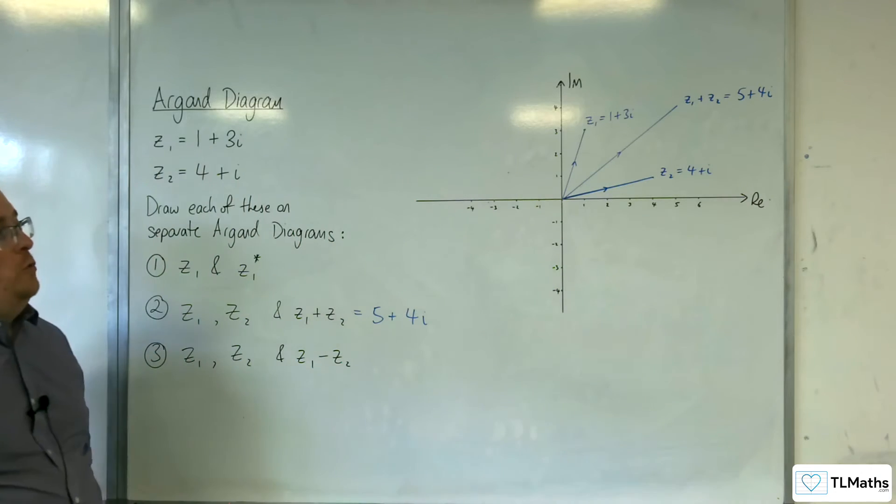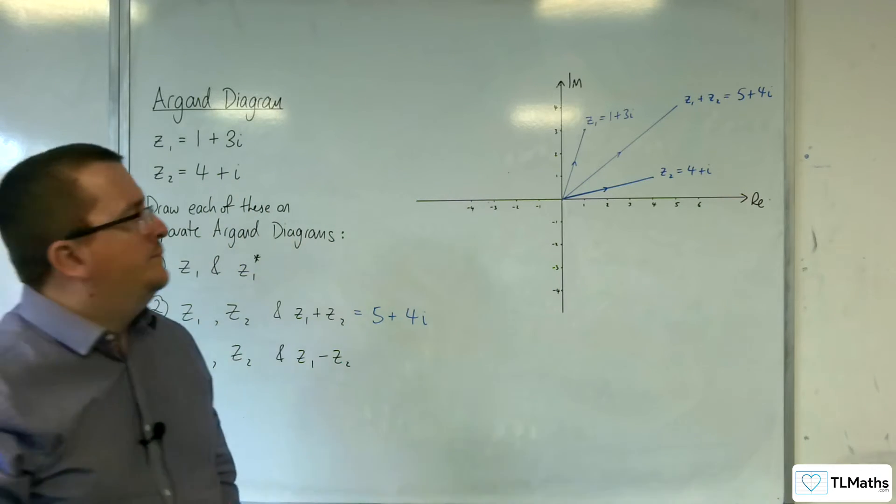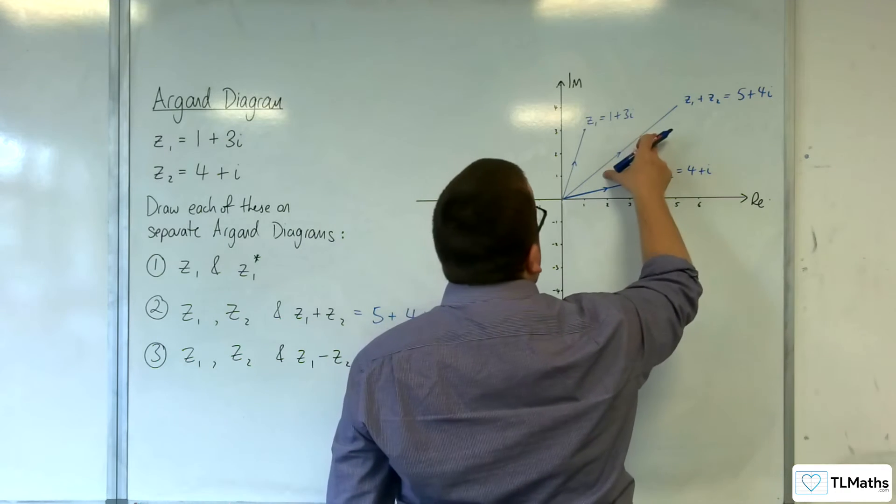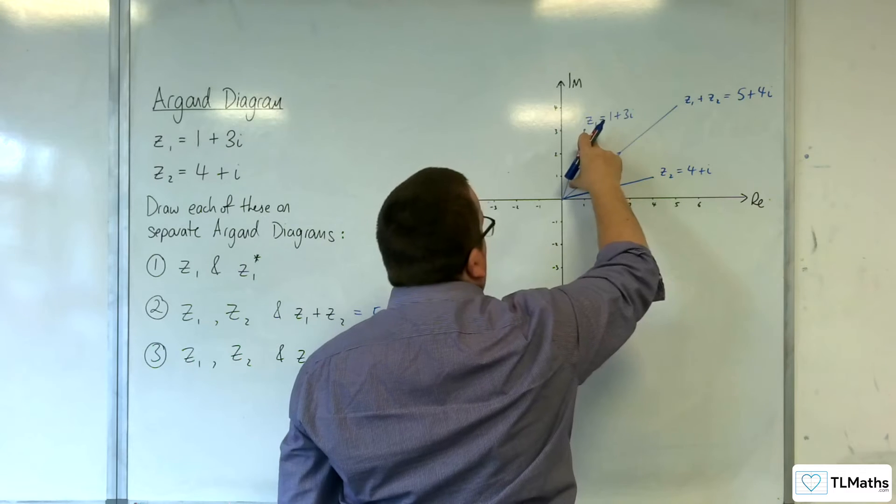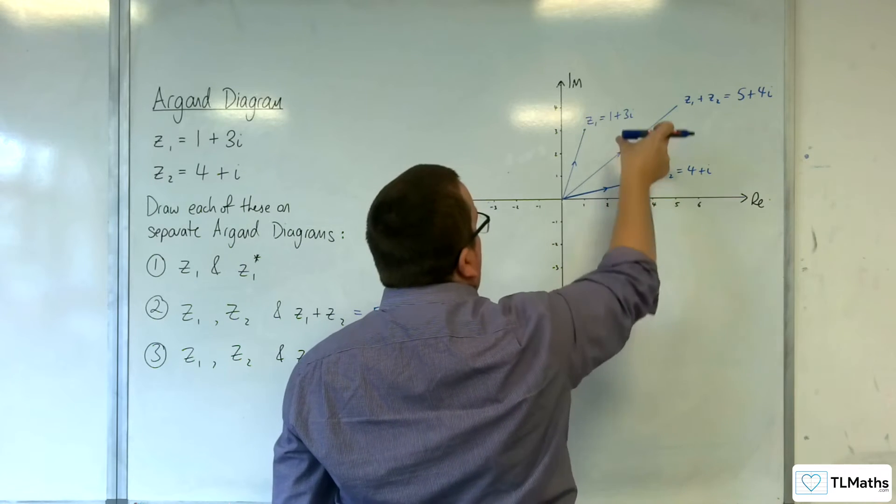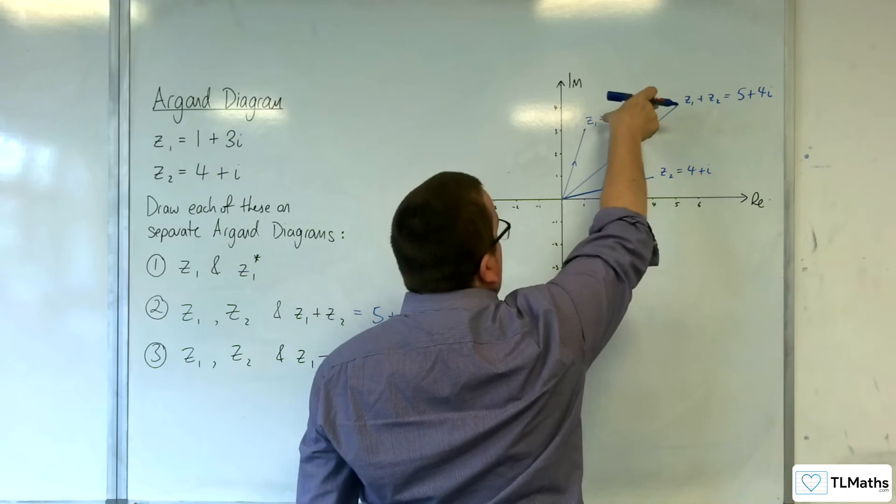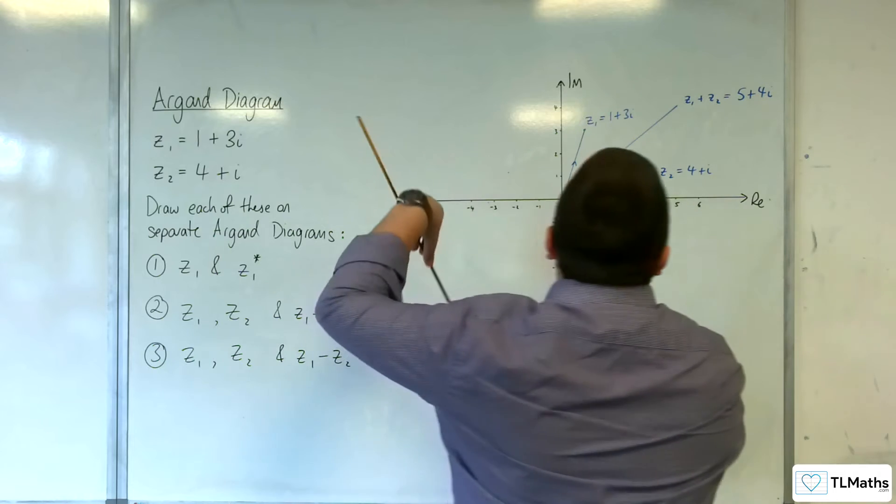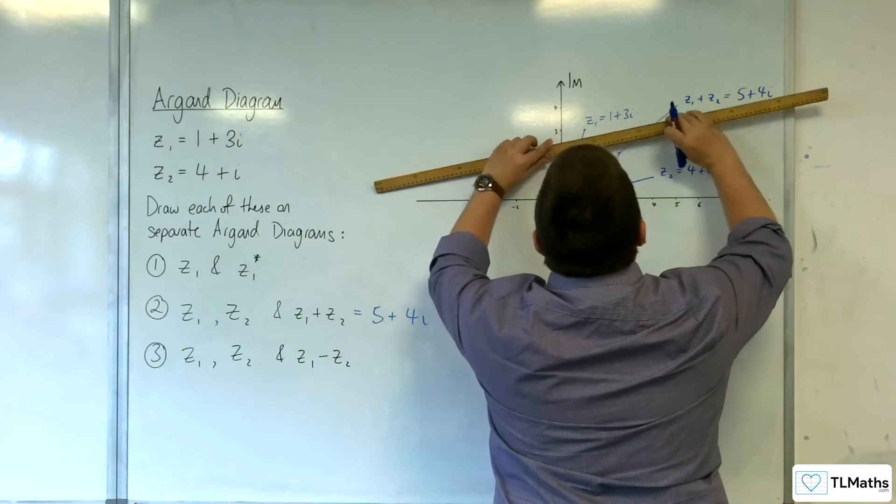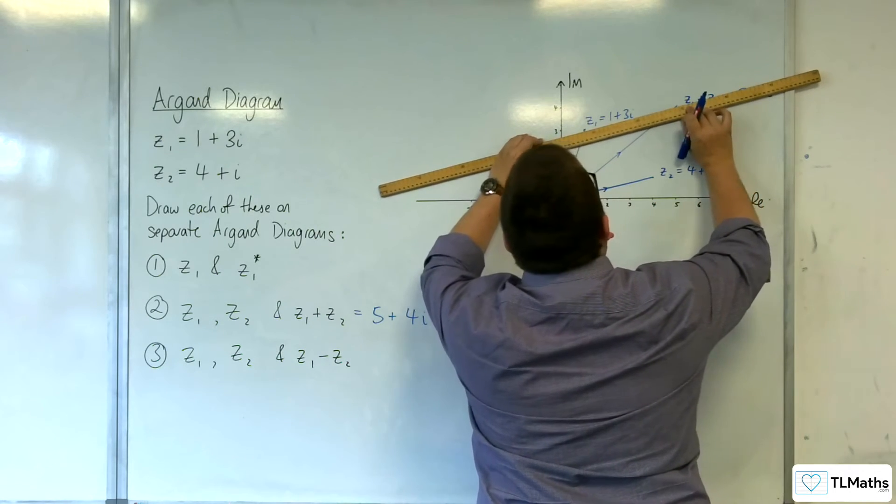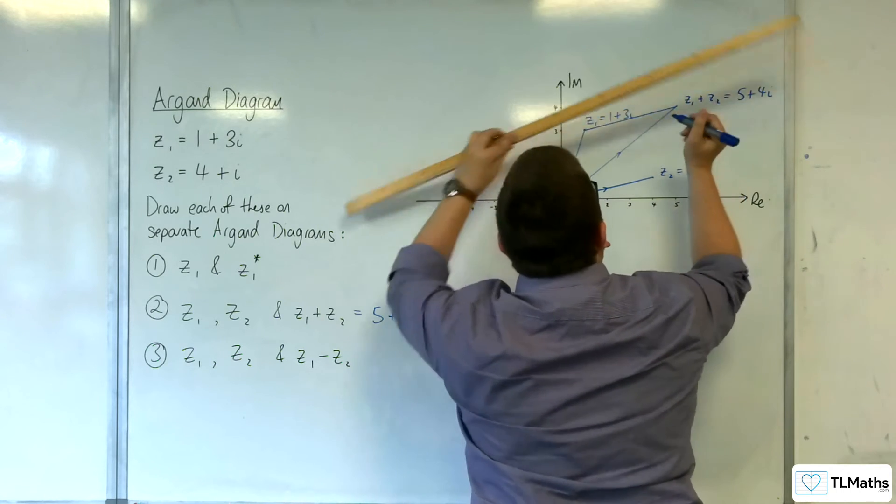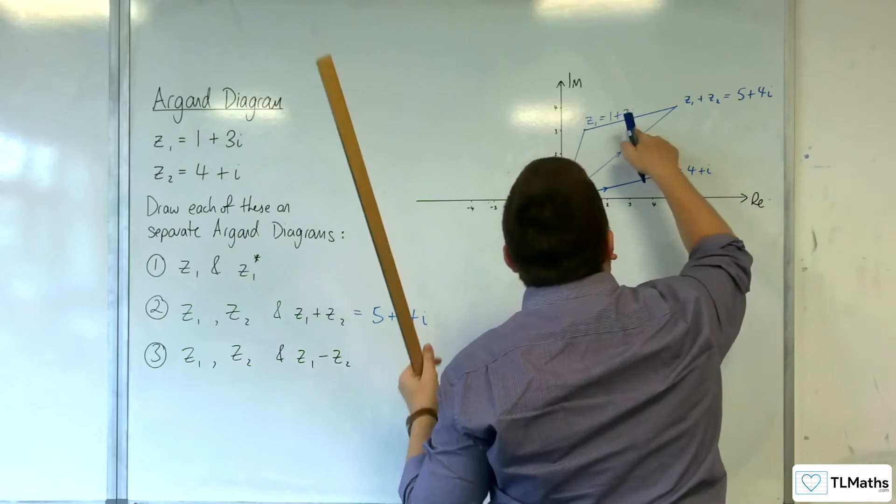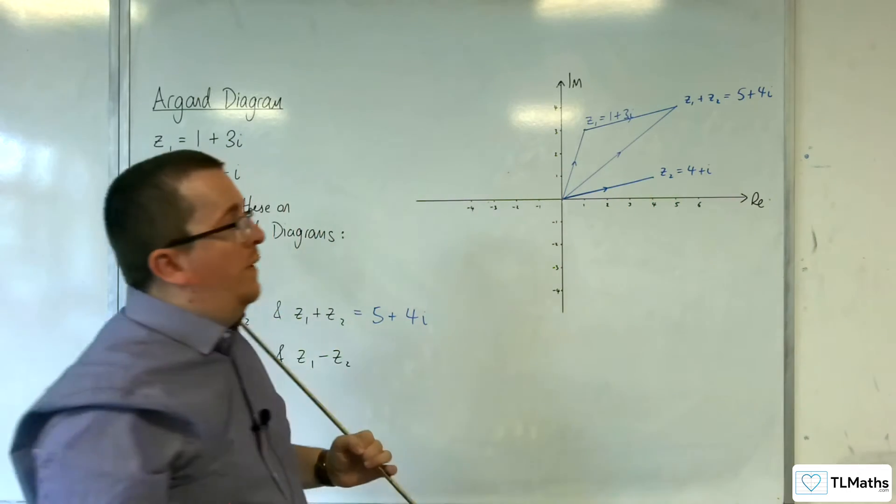what I want you to understand and see from that is that Z1 plus Z2 is the same as getting your Z1 and then picking up and adding Z2, physically adding it onto the end. Because if you join up Z1 with Z1 plus Z2, that vector that you've got there is precisely the same as that one there.